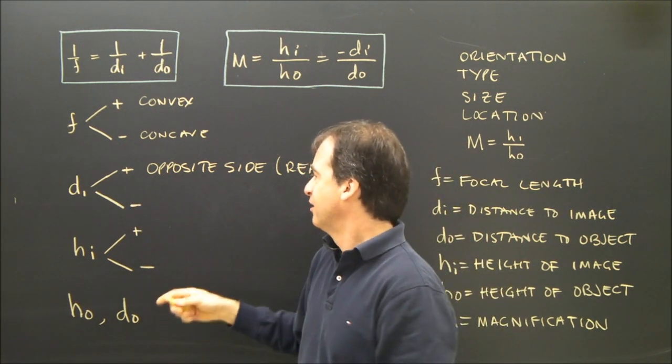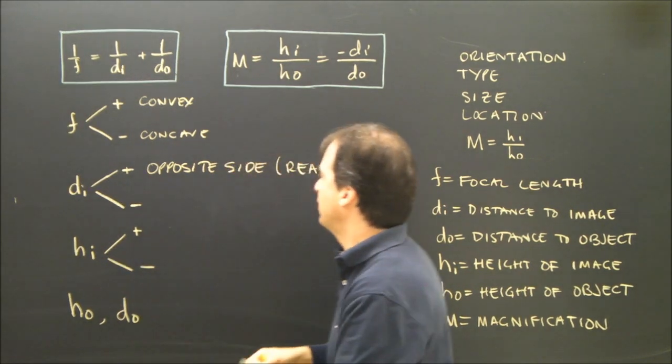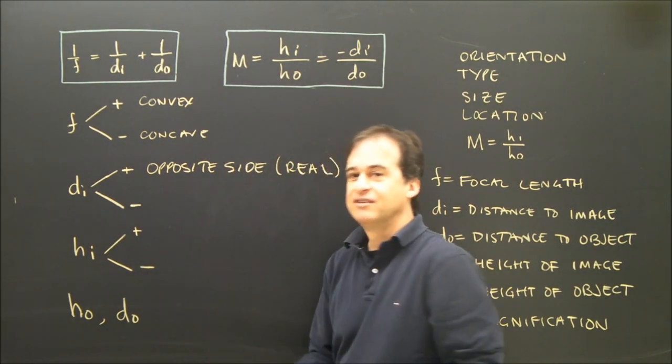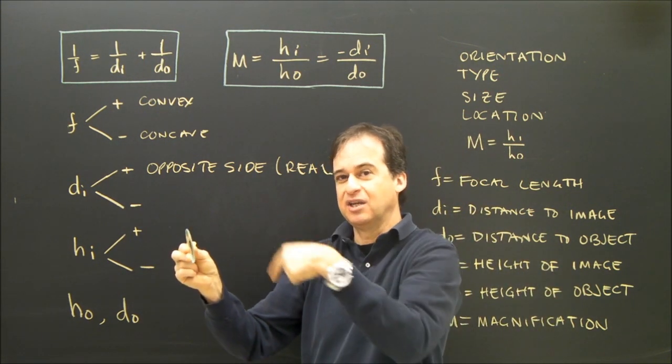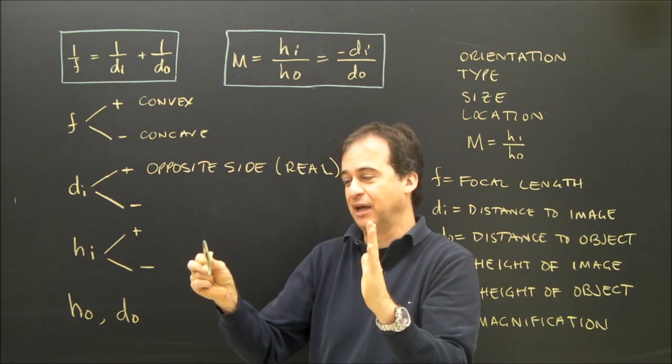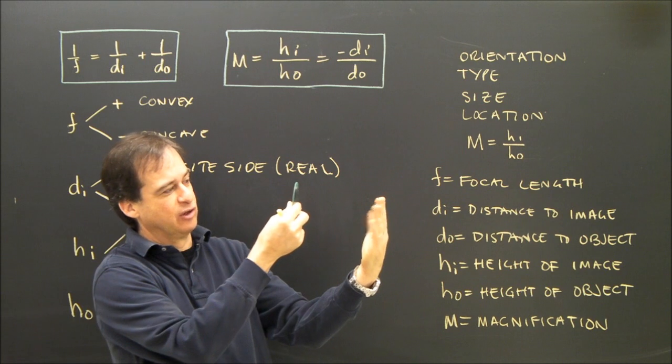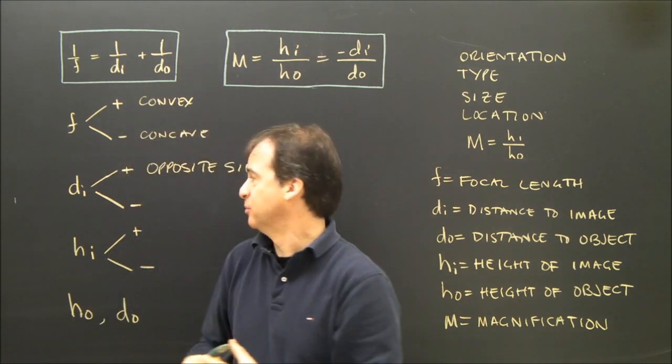If DI ends up being negative, then that means the image is on the same side as the lens. So if we have an object here and a lens here, it means the image is over here somewhere, floating in space. And the way you see that kind of image, you have to look through the lens. So I look through the lens, and I see my finger is bigger. That's a virtual image.